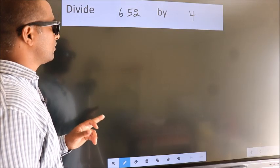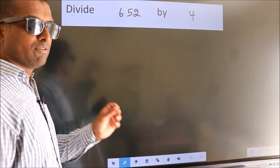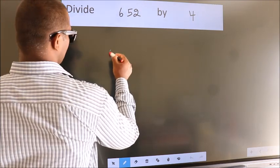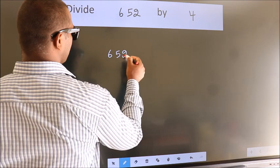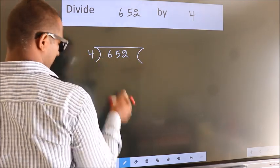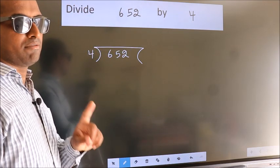Divide 652 by 4. To do this division, we should frame it in this way. 652 here, 4 here. This is your step 1.